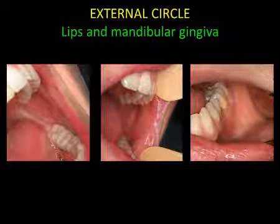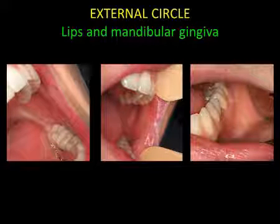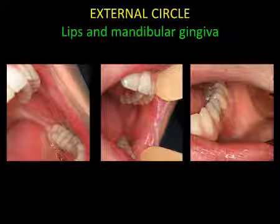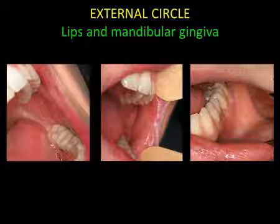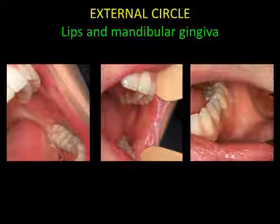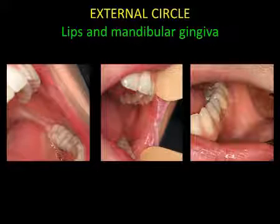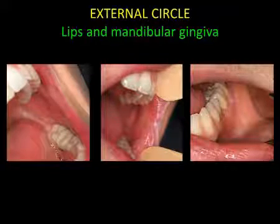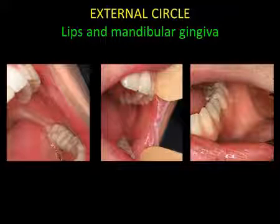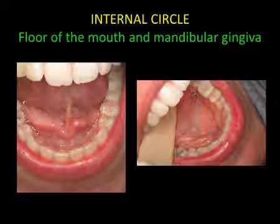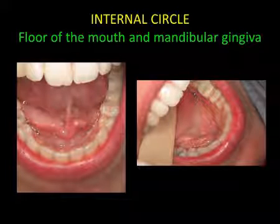The external circle continues with the examination of the cheeks. The examination of the retro-commissural zones involves the most posterior part of the cheek, which terminates at the intermaxillary commissura. The mucosa of the cheeks is a non-keratinised mucosa which contains significantly fewer minor salivary glands than the labial part.